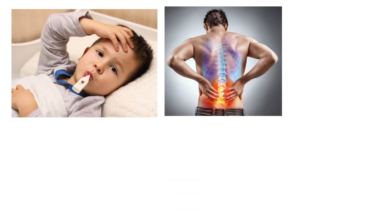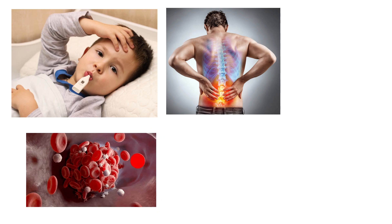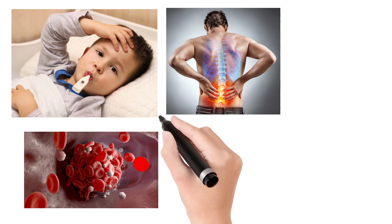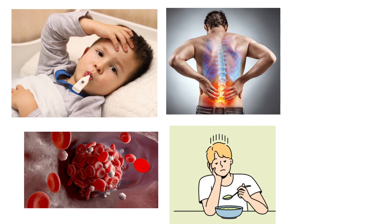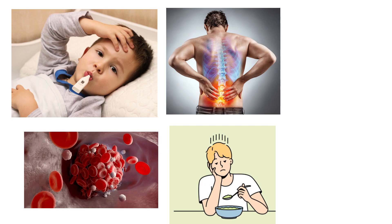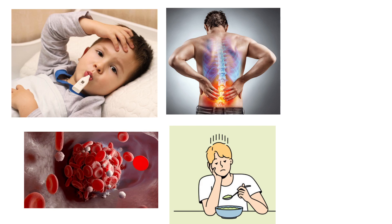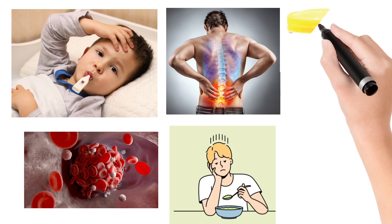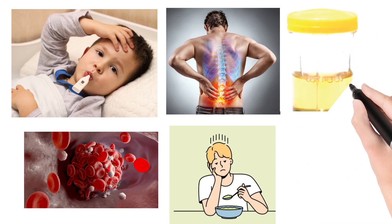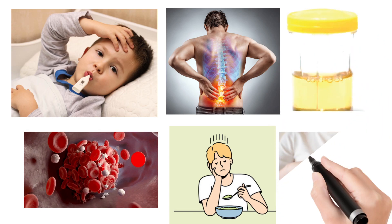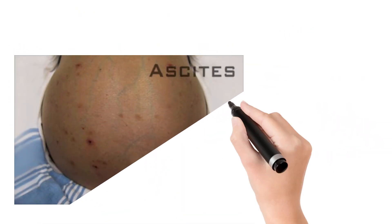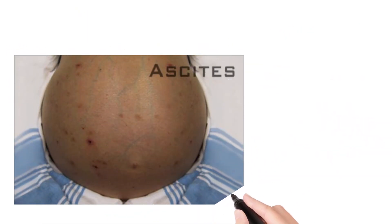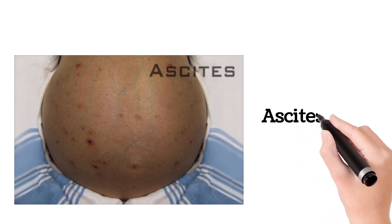Muscle ache will be seen and there are high chances of bleeding easily. There is loss of appetite — the person doesn't want to eat anything and doesn't feel hungry. There will be dark colored urine, the skin will become itchy, and in severe cases, there will be fluid buildup in the stomach, called ascites.